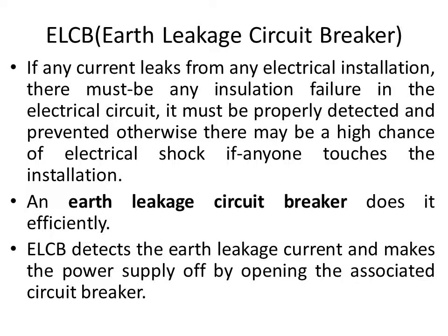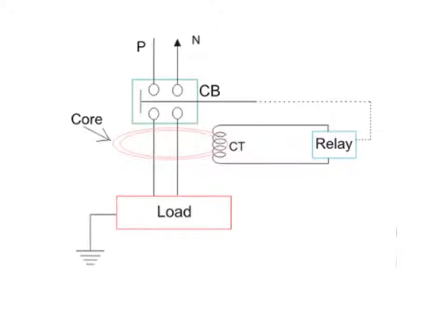An ELCB detects the earth leakage current and switches the power supply off by opening its circuit. In the ELCB diagram, there is a phase and neutral wire. In normal conditions the circuit breaker is closed. In abnormal conditions — leakage between phase and neutral — the leakage is detected by the core of the transformer, which operates the CT, sending a signal to the relay to open its contact and cut the load from the main supply.